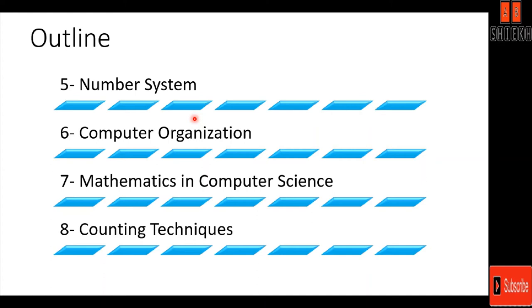In sixth we will be discussing the computer organization in detail including some different components of the computer systems and their details. In the seventh lecture we will clearly identify the importance of mathematics in computer science including cryptography, optimization problems and graph theories.